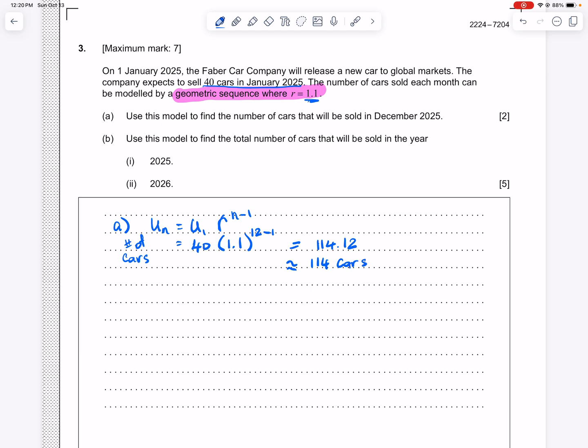All right. So the next part of the question, B1, wants to know the total number of cars sold in the whole year. So January, February, March, April, May, June, July, August, September, October, November, and December. Now, it would be a lot to calculate all 12 months or to calculate the other 10 months that we don't know yet. But we do have an equation for some.